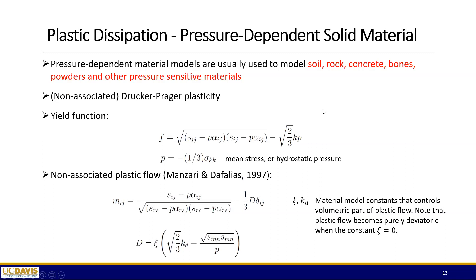Next we move on to pressure-dependent solid material models, typically used for soil, rock, concrete, bones, powders, and other pressure-sensitive materials. The theory used is non-associated Drucker-Prager plasticity. The main difference from the previous yield function is the presence of a pressure term. The non-associated plastic flow is introduced here because it will be used in the plastic free energy and plastic dissipation expressions. A few material model constants control the volumetric part of the plastic flow; when the constant C equals zero, the plastic flow becomes purely deviatoric.